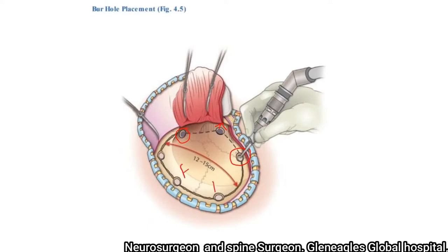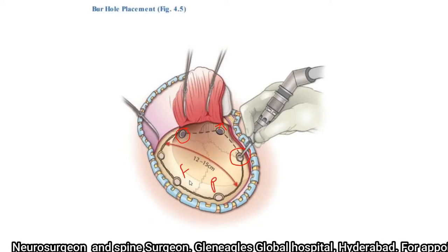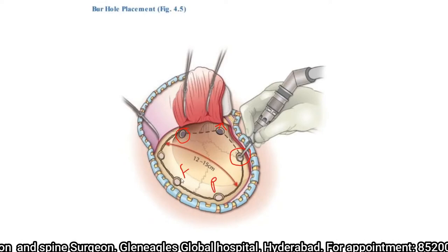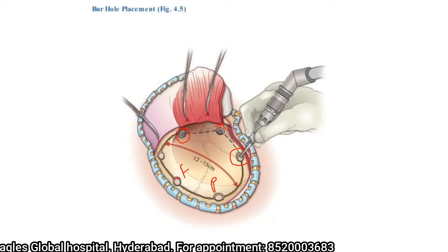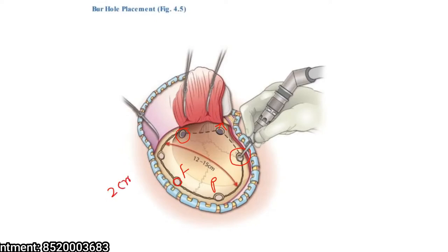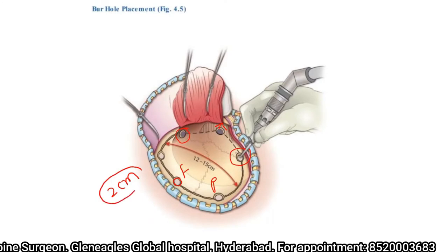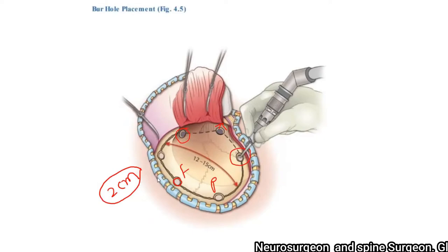The frontoparietal burr holes are placed near the frontal bone and parietal bone near the midline. Ensure that these burr holes along the midline are at least one to two centimeters away from the midline. This is a very important precaution because if you place the burr holes on the midline, there are high chances of injury to the superior sagittal sinus.